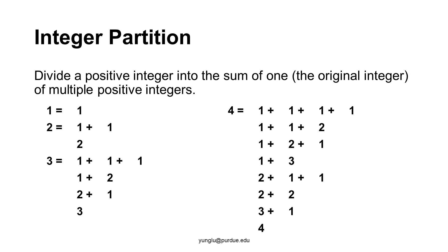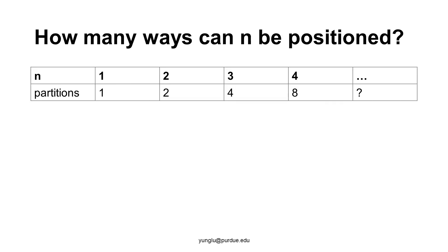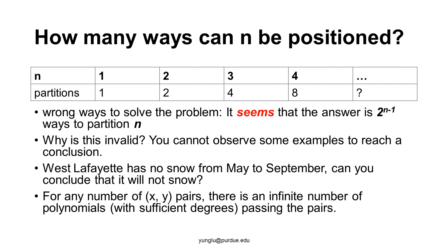The question is: how many ways can we partition the number N? Some people may quickly jump to an answer, saying the answer seems to be 2 to the power of N minus 1. If you ask these people how they got this answer, they will probably say they observed the trend. Unfortunately, observation is not a scientifically valid way to solve problems. For example, imagine you visit West Lafayette during May and September — you see no snow for six months. Can you conclude that snow will never happen in West Lafayette? You cannot reach a conclusion simply by observing some examples.